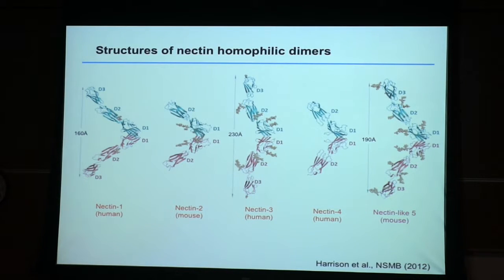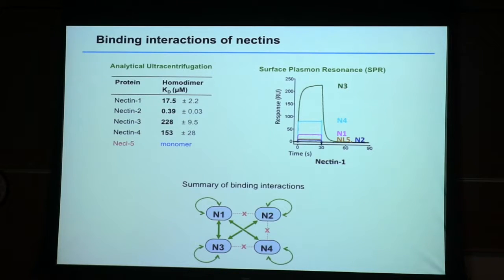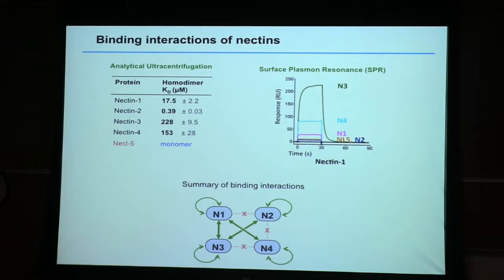Another family of proteins that are cell-cell recognition proteins are called nectins. These actually have three immunoglobulin domains. We solved the structures of a bunch of them and they all look alike — they form an interface at the membrane distal region. When we measured the binding affinities of nectins, we found their behavior is very different from classical cadherins. These are homophilic binding affinities ranging from 0.4 to about 200 micromolar. Membrane-binding proteins tend to have much weaker affinities than cytoplasmic proteins — these numbers are quite typical.